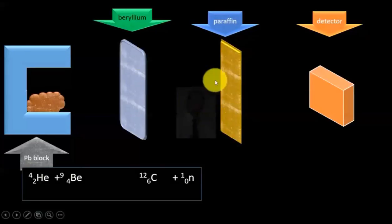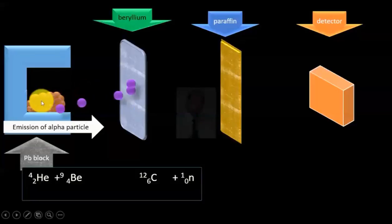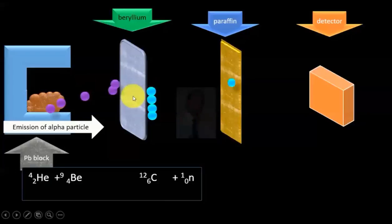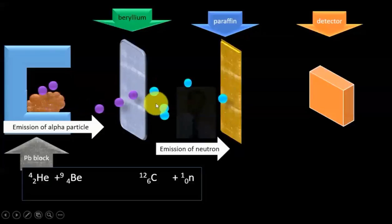A paraffin wax, which is a proton-rich material, was placed in front of beryllium before the detector. When alpha particles started emitting out of polonium onto beryllium metal, again the same happened. Neutrons were released, emission of neutron took place.